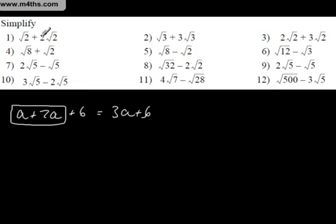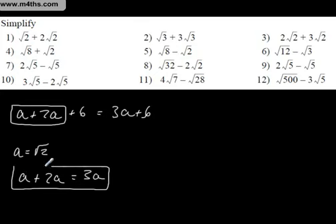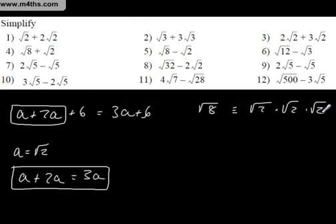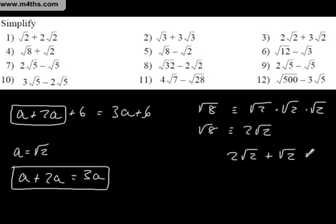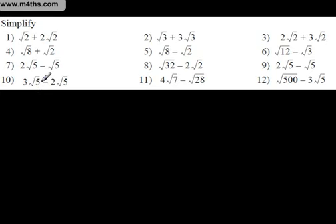Surds are slightly different. I've got √2 plus 2√2. Even if you need to say a equals √2 and do a substitution, you've got a plus 2a which equals 3a, or 3√2. We can't always add surds directly, but let's think about √8: √8 is √2 times √2 times √2, so √8 is actually 2√2. So when adding √8 to √2, what we're really doing is 2√2 plus √2, which equals 3√2.